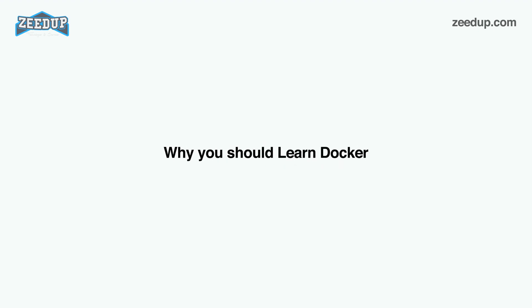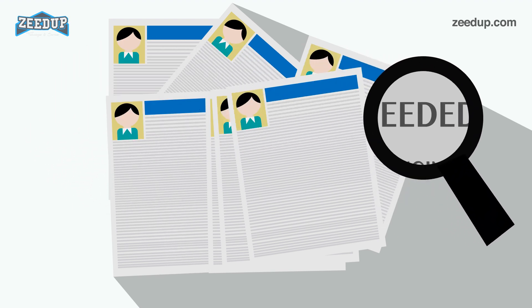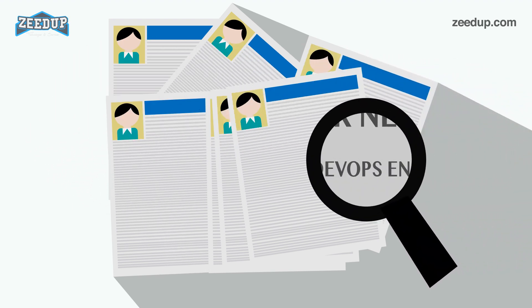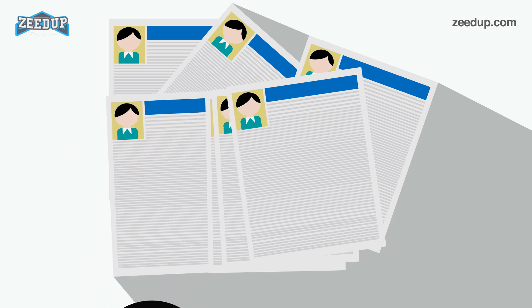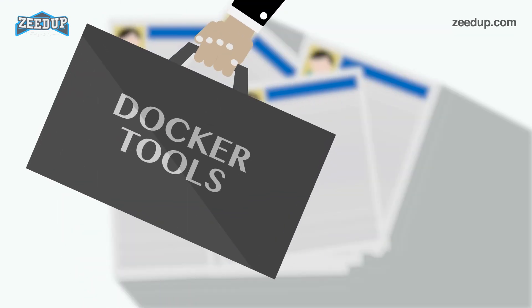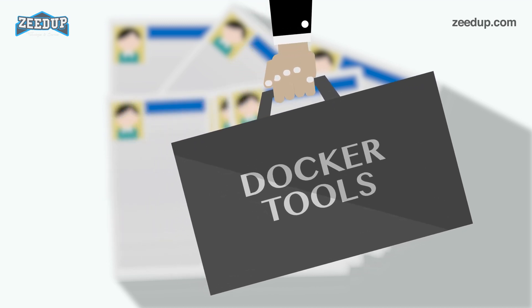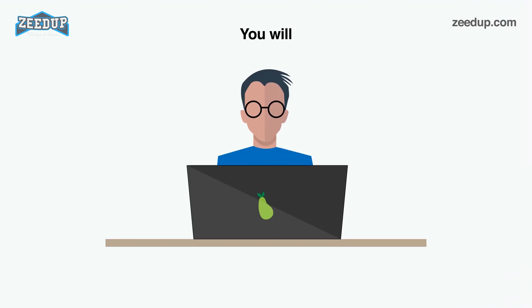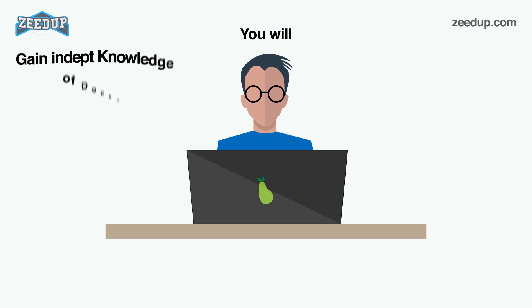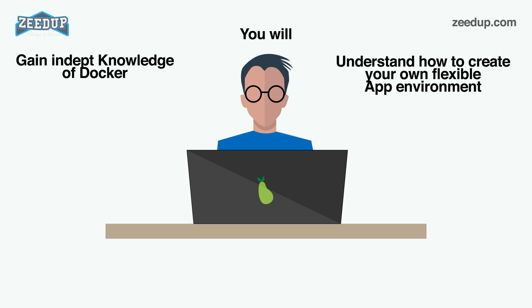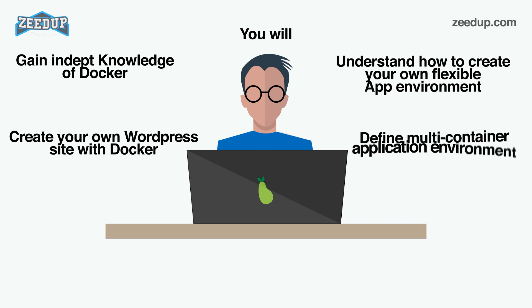Why you should learn Docker: Obviously, Docker is important, and its prevalence in the job market is incredible. A recent search on LinkedIn revealed 28,941 jobs across the country are available. With cloud and Docker becoming more linked every day, that demand will only grow. Thus, you need to have Docker skills to have a wonderful future in DevOps. It's easy to learn Docker too. You can begin with the basics and take a Docker in-depth training course, where you'll gain in-depth knowledge of Docker as a containerization tool and understand how to create your own flexible application environments using Docker Compose. You'll also create your own WordPress site with Docker and define multi-container application environments, among other things.